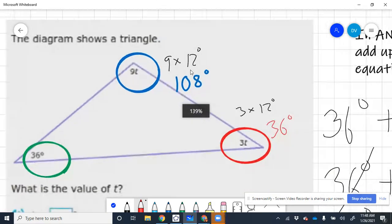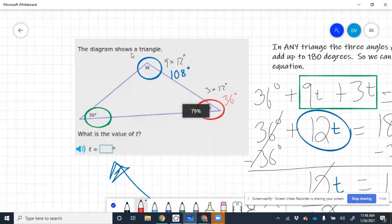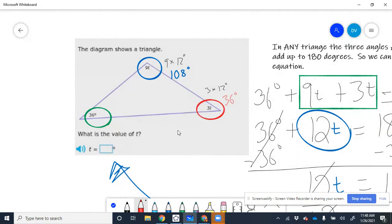So we want to check before we submit, so we don't lose any points. If we add up the blue and the red and the green, if we add up 108 degrees, plus the red, doesn't matter what order we do these in, plus the 36 degrees, plus the green. The green is also 36 degrees.